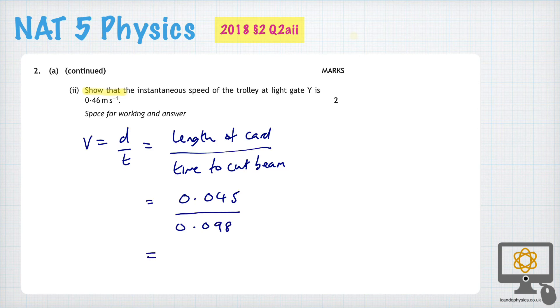And so with that done, you can determine that the value is 0.46, not 44, 46 meters per second. And so to get the full marks, the key thing is that you start with a formula.